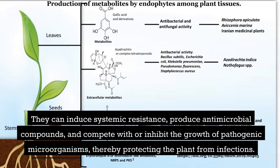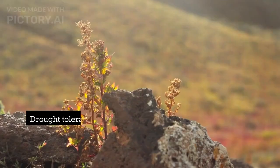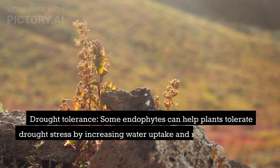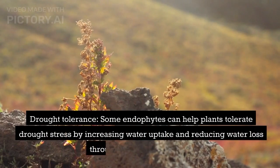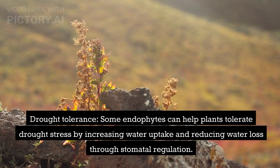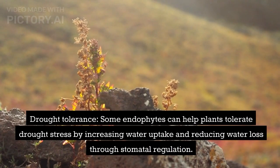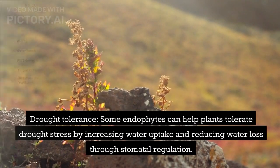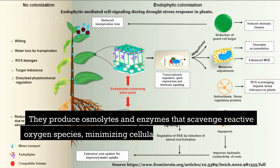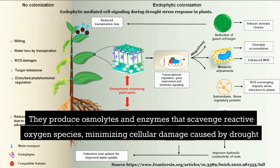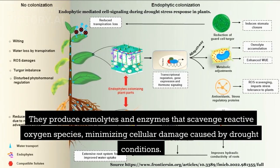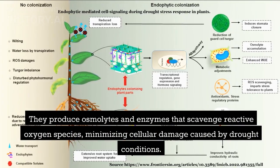Drought tolerance: some endophytes can help plants tolerate drought stress by increasing water uptake and reducing water loss through stomatal regulation. They produce osmolytes and enzymes that scavenge reactive oxygen species, minimizing cellular damage caused by drought conditions.